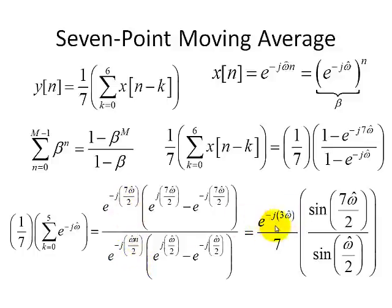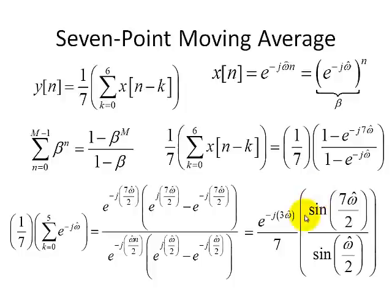We'll see later, when we talk about the Fourier transform of discrete time systems, that the e to the minus j 3 omega-hat term is just a delay term. Let's concentrate on this filter description of sine over sine — we'll see that this has a low-pass filtering effect. When we average values, it filters out the large fluctuations and smooths out our input, so the final output is basically a smooth version of our input.